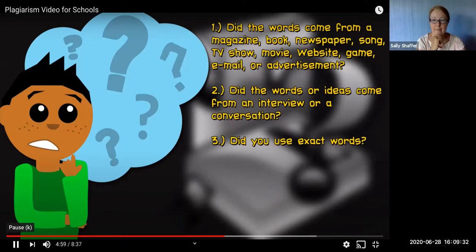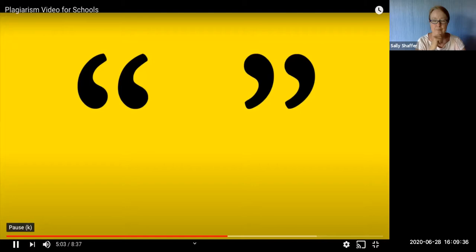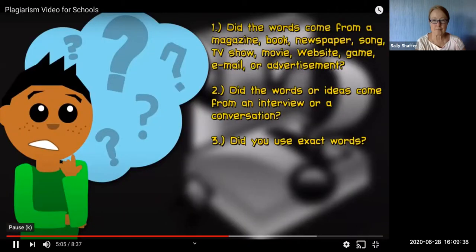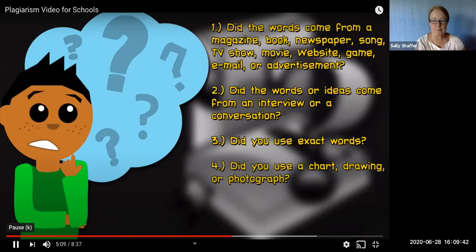Exact words. If you write verbatim, meaning word for word, you need to use quotation marks. You also need to tell the teacher where it came from. Finally, if you use a chart, a drawing, or a photo, make sure that you give credit for that. Okay, so I'm going to jump ahead again.